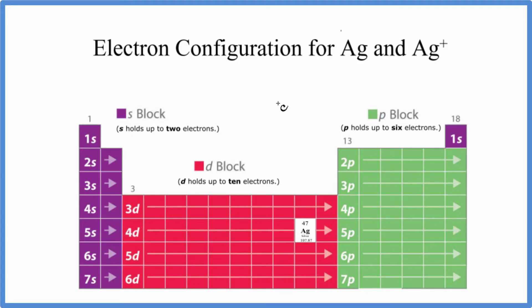We have the periodic table here divided up into these orbital blocks. This will be really helpful for us. We can see silver right here. That's 47.